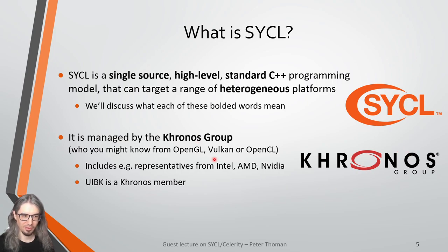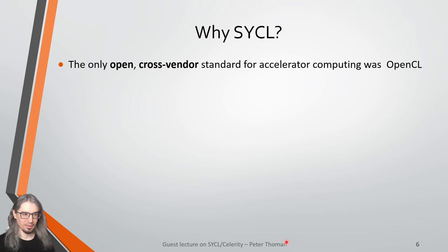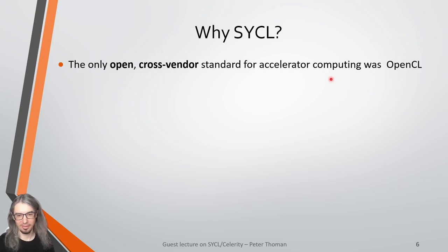You might know the Khronos Group for more widespread technologies they manage, including OpenGL, Vulkan, and OpenCL. OpenCL is a nice keyword here — it was basically the only open cross-vendor standard for accelerator computing until SYCL came around, and the only one that gained any widespread acceptance. But clearly we need a cross-vendor standard, and OpenCL does not really address all possible use cases.